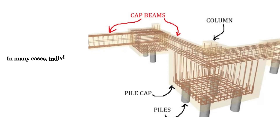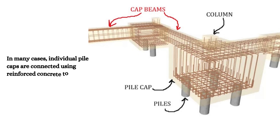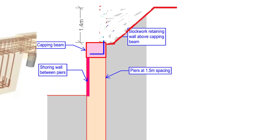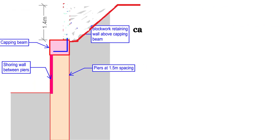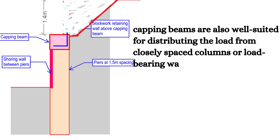You might wonder where the pile cap fits in. In many cases, individual pile caps are connected using reinforced concrete to form a continuous capping beam. Typically, at least three piles are tied together to ensure adequate resistance against lateral forces, except in the case of caisson piles. In addition to providing stability, capping beams are also well suited for distributing the load from closely spaced columns or load-bearing walls evenly across a row of piles.